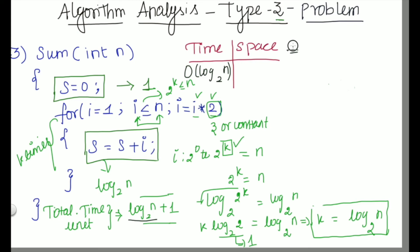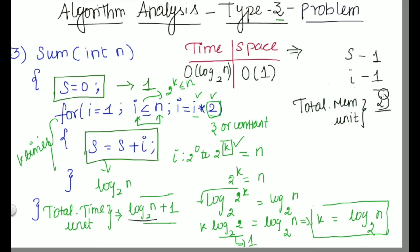Now let's find the space complexity. We have two variables: s and i. Each variable takes one unit of memory, so the total memory unit is 2, which is constant. Therefore, the space complexity for this problem is O(1). Why we write this as O(1) and what it means is discussed in lecture 2 — go watch it if you want.